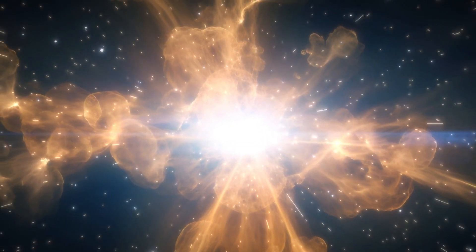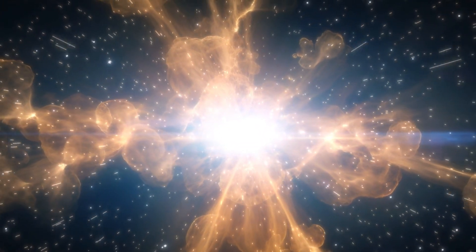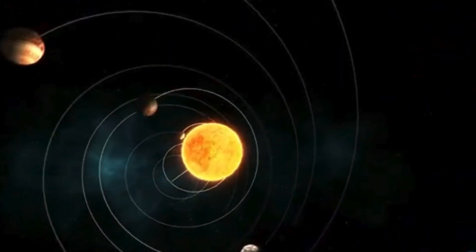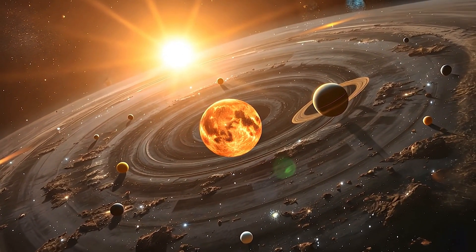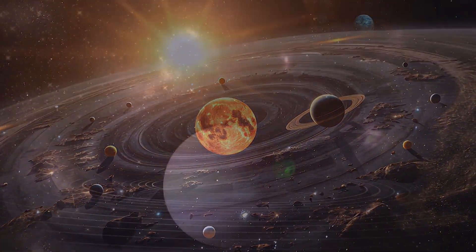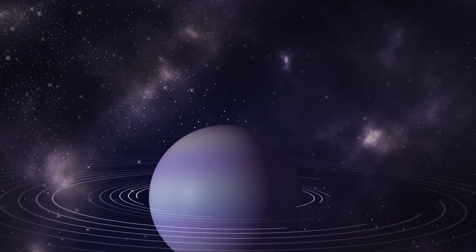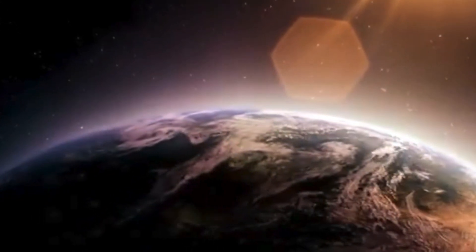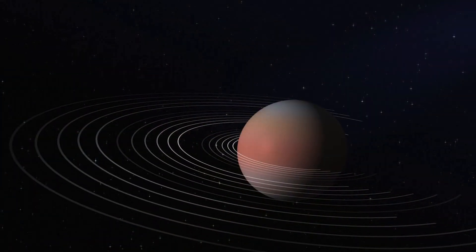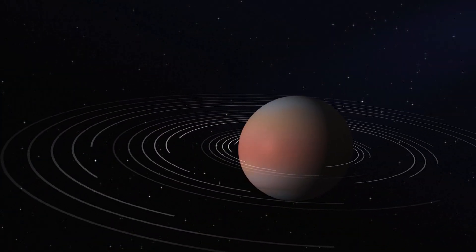14 million years ago, a silent but powerful force within our galaxy may have altered the course of Earth's history. As our solar system journeyed through the Milky Way, it encountered the Radcliffe Wave, a massive 9,000-light-year-long structure of interstellar gas and dust rippling like a cosmic tide through space.